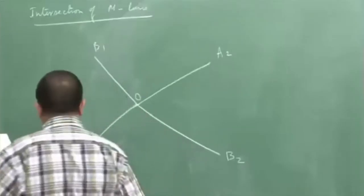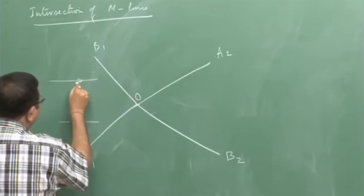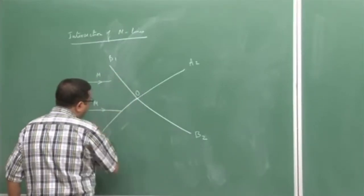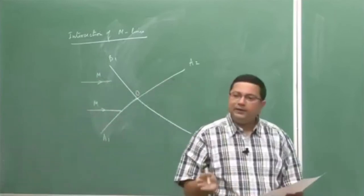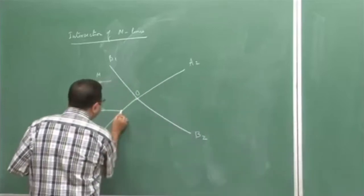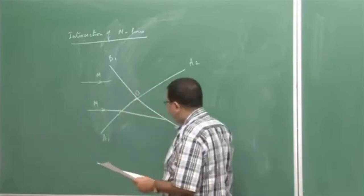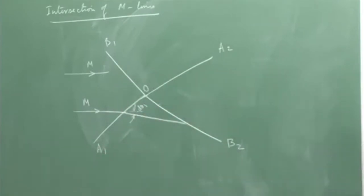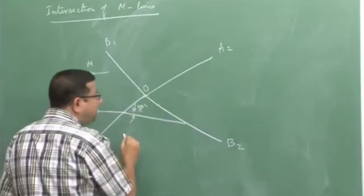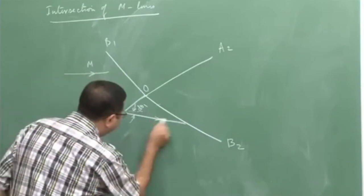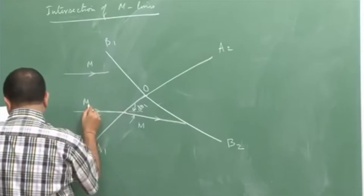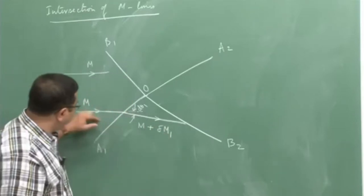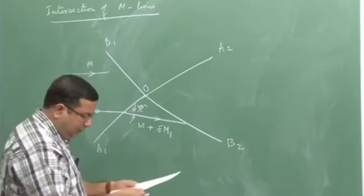Now let us see what happens to the flow. Here, the flow is uniform in this domain, coming with Mach number M. First let us look at the bottom one. This flow comes to this Mach line. When it crosses this Mach line, it gets deviated. The deviation for this Mach line is d_theta_1, and after crossing the Mach line, not only does it get deviated, it gets accelerated. So the Mach number changes. In this branch, let us say the Mach number is M plus delta_M_1. So initially this was M, and now it is incremented by the amount delta_M_1.